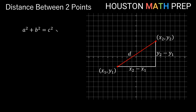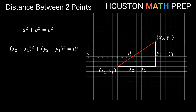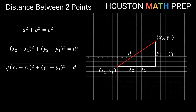From the Pythagorean theorem, this thing squared plus this thing squared equals this thing squared, giving us the distance version: (x2 minus x1) squared plus (y2 minus y1) squared equals d squared. We don't want d squared as our answer, so we square root both sides. Our distance formula is: d equals the square root of the quantity (x2 minus x1) squared plus the quantity (y2 minus y1) squared.